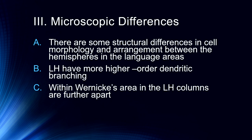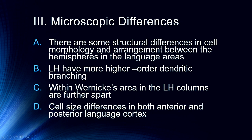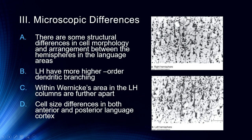Particularly within Wernicke's area in the left hemisphere, the columns are a little bit further apart, providing potential for expansion of functioning and more potential for growth as we experience language. There are also cell size differences in both anterior and posterior language cortex — a little bit larger, particularly in the pyramidal cell layer, in the left hemisphere compared to the right hemisphere. You can see the cell morphology differences pretty clearly here, with the bottom figure being the left hemisphere and the top being the right.